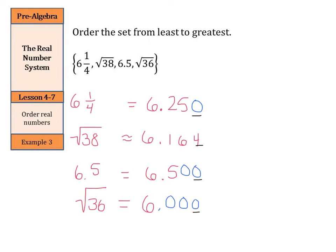So now I have the 6 part is true with all of them, but then I have 250 thousandths, 164 thousandths, 500 thousandths, and well, no thousandths. So when I go to put these in order, my no thousandths is going to be my least. Then my 164 thousandths is my next, then 250 thousandths, then 500 thousandths. So when I go to write my final answer, write it using the original numbers from the question. We have the square root of 36 first, then the square root of 38, followed by 6 and 1 fourth, then 6 and 5 tenths. Those are the numbers ordered from least to greatest.